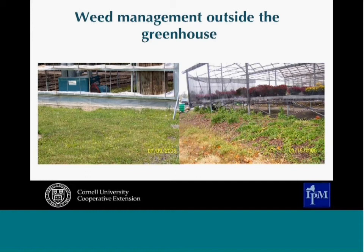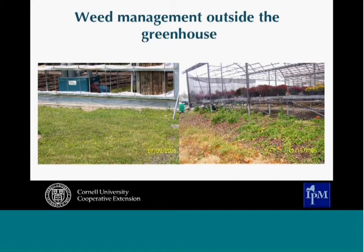Remember that many weeds come in from outside. Mowing along the edges can help. Greenhouses with open sides allow wind-blown seeds in from any flowering weeds nearby. One example shows mulch placed along a greenhouse edge as a barrier, but it wasn't maintained and weeds are now growing right up against the shade cloth.